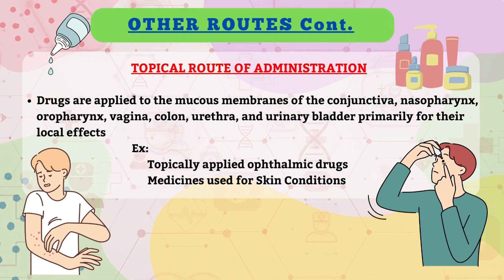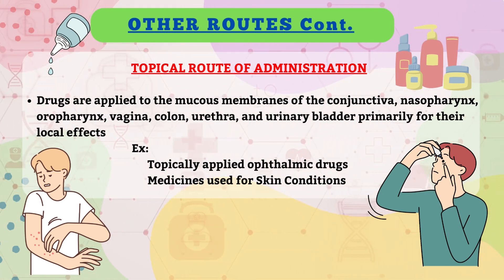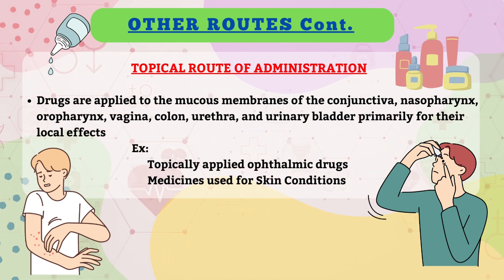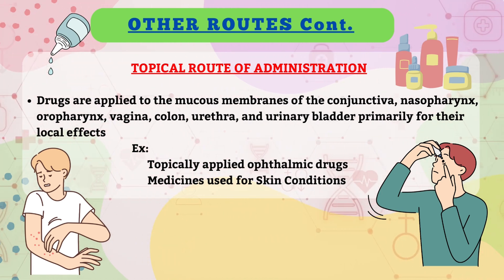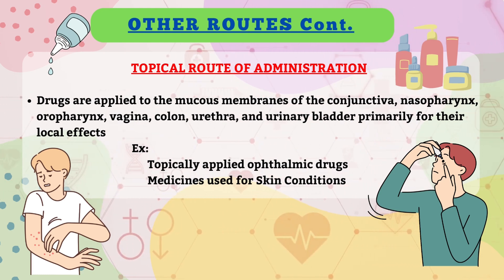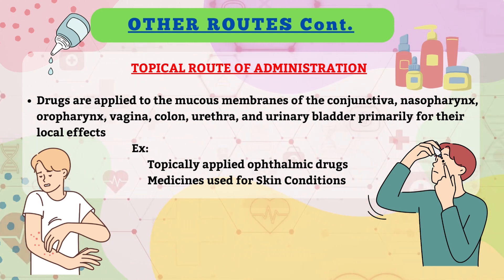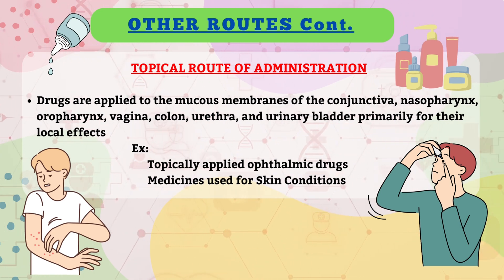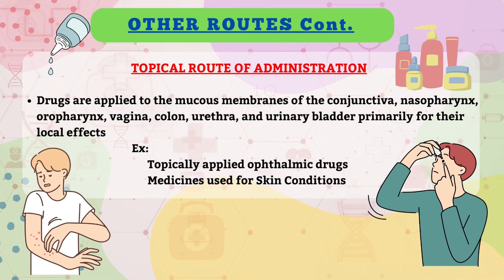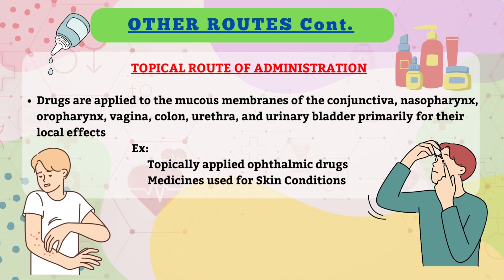In topical administration, drugs are applied to the mucous membranes of the conjunctiva, nasopharynx, oropharynx, vagina, colon, urethra, and urinary bladder, primarily for their local effects. Topically applied ophthalmic drugs and medicines used for skin conditions are some examples.